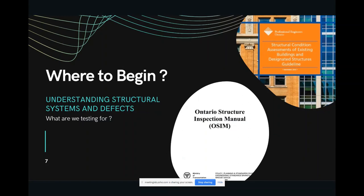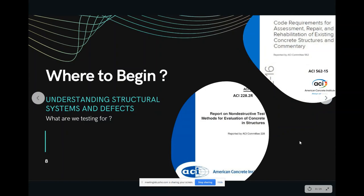Two other very useful documents are the ACI Committee 228 report on non-destructive test methods for evaluation of concrete structures, and the ACI 562 code requirements for assessment, repair, and rehabilitation of existing concrete structures. These two documents provide testing solutions — you can review alternatives in testing, understand what you're looking for, and then design a reliable condition assessment scheme that collects information about the present condition of the structure and supports a meaningful repair scheme.